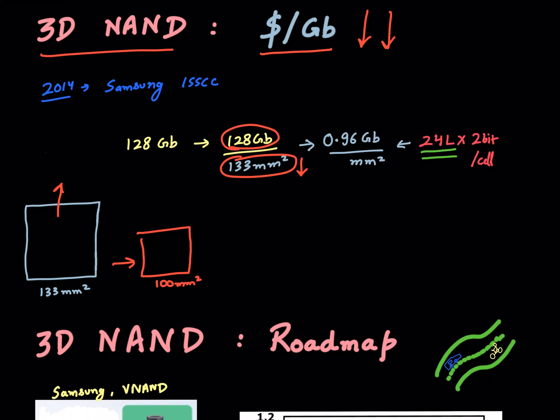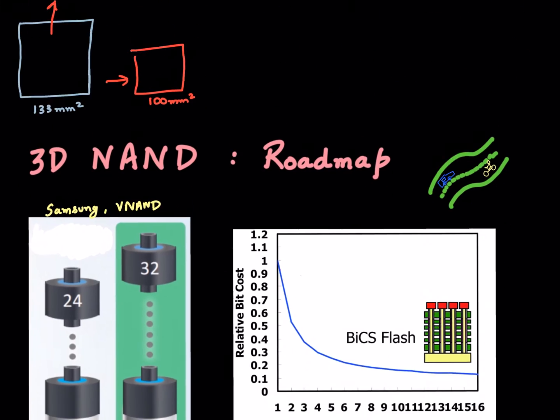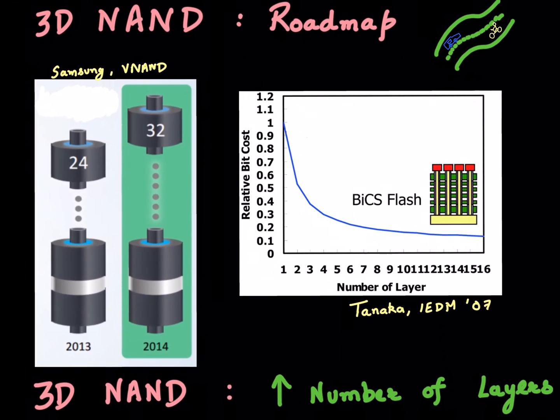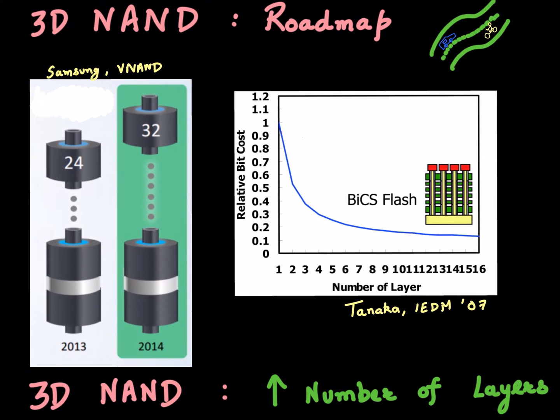It could also be increased by increasing the number of bits that each cell stores. That's exactly what the flash industry focused on in their first few generations of 3D NAND. I'm showing here the roadmap for 3D NAND memory. The very first product released in 2013 had 24 of these layers—24 cells—and a capacity of 128 gigabit per die.